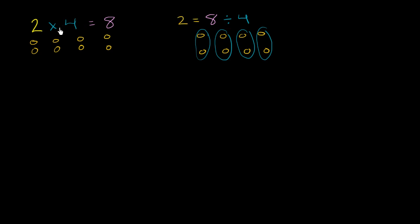So you probably see the relationship. 2 times 4 is 8. 8 divided by 4 is 2. And actually, if we did 8 divided by 2, we would get 4.